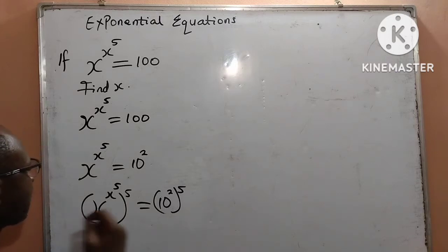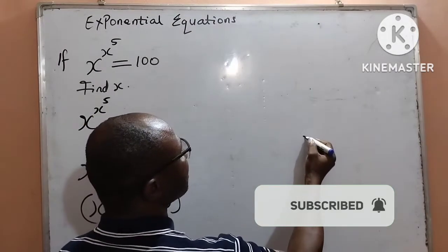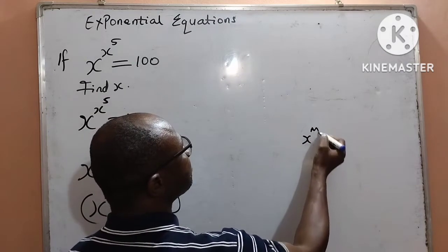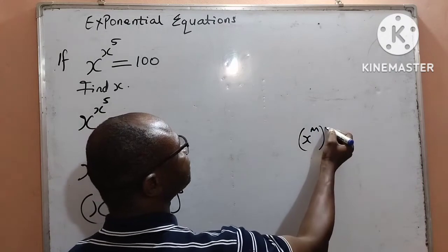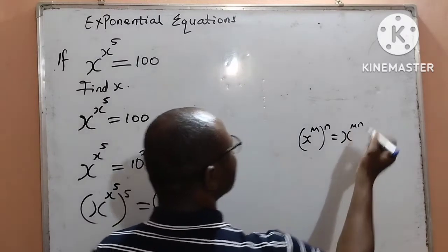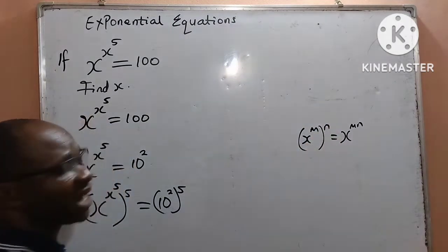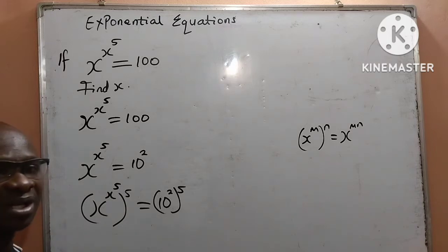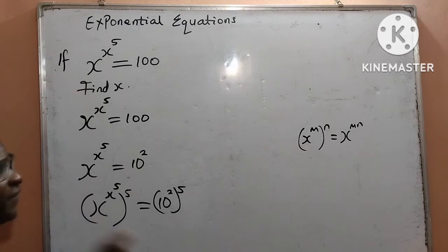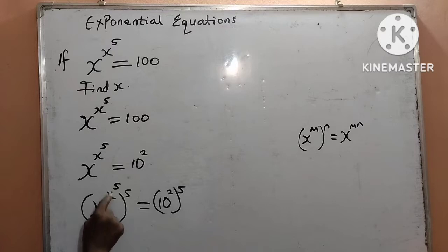Now let us remember the law of indices where we have that x to the power of m to the power of n is equal to x to the power of mn. What it means is that the power inside the bracket will multiply the power outside the bracket. If we bring it here, from the right hand side, the power 2 will multiply 5. And by the left hand side, the power x to the power of 5 will multiply the power outside the bracket, which is 5.